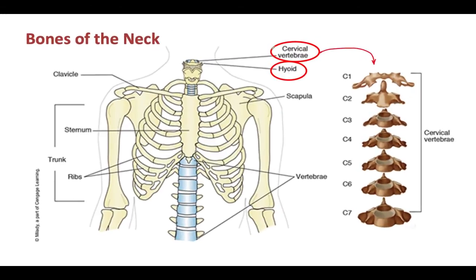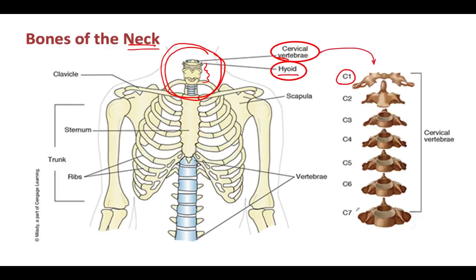Now we look at the bones of the neck, specifically focusing on this region. There are two main bones: the hyoid bone, whose purpose is to support the tongue and its associated muscles, and the cervical vertebrae, which support the neck region. The cervical vertebrae has seven vertebrae — one through seven — localized within the neck, forming the building blocks of the neck region.